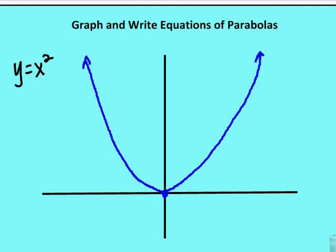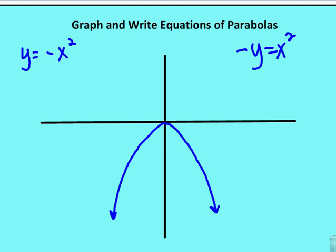Recall that there are four different orientations of the parabola. One is when the parabola is facing up: y is equal to x squared. The other is when the parabola is facing down: y is equal to negative x squared, or negative y is equal to x squared. In both of these cases, the axis of symmetry is going to be vertical, running up and down through the vertex.